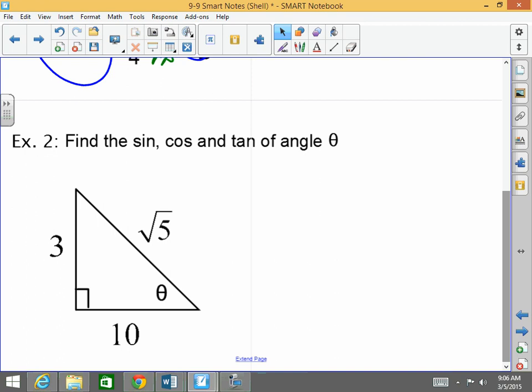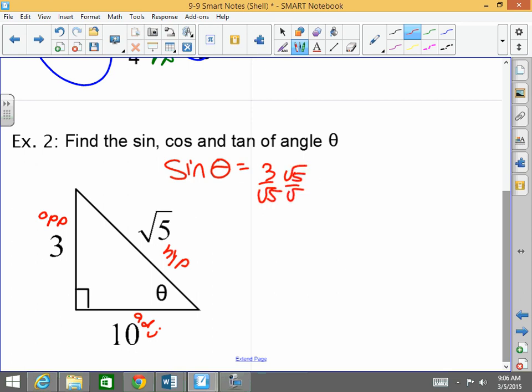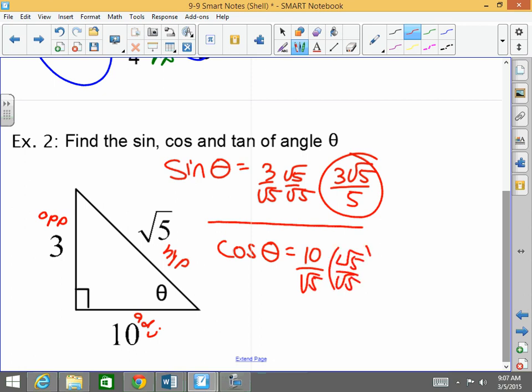Now, here, just find the sine. I don't want the angle, but what would the sine of theta here be? This is going to be opposite. Remember, this is my opposite. This is my hypotenuse. So that's going to be 3 over radical 5, but I must rationalize. So this is going to be 3 radical 5 over 5. What's the cosine of theta? Adjacent over hypotenuse, but I have to rationalize. So it's going to be 10 radical 5 over 5, which is 2 radical 5. Very good. And what is the tangent of theta? Opposite over adjacent is 3 over 10.